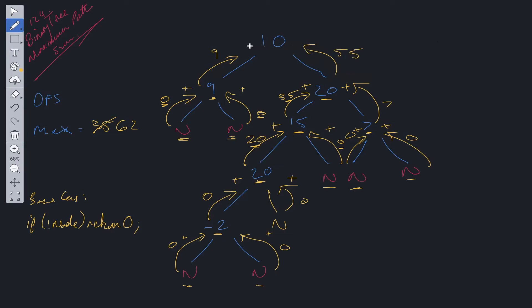Now at this level, we have the root value of 10 plus 9 plus 55, which is equal to 74. So we can update the max again. And because we've reached the root, we have nowhere else to look. So we return this value here.